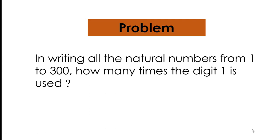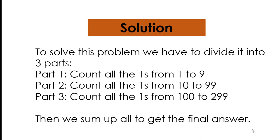Hello everyone. Welcome to my YouTube channel Math Addiction. Today we will discuss a problem: in writing all the natural numbers from 1 to 300, how many times is the digit 1 used? To solve this problem we have to divide it into three parts. Part 1: count all the ones from 1 to 9 (one-digit numbers). Part 2: count all the ones from 10 to 99 (two-digit numbers). Part 3: count all the ones from 100 to 299 (three-digit numbers). Then we sum up all the results to get the final answer.